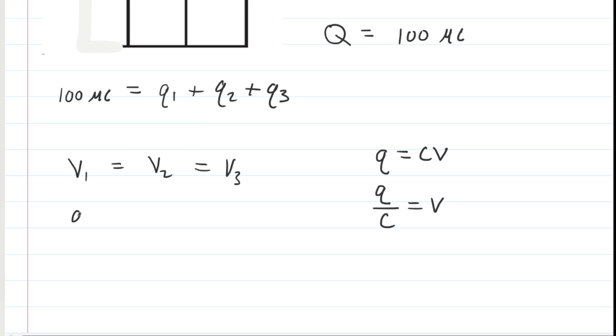We could take V1 and rewrite that as Q1 over C1. And the same thing with V2 and V3. We'll have Q2 over C2, and that's going to equal Q3 over C3.